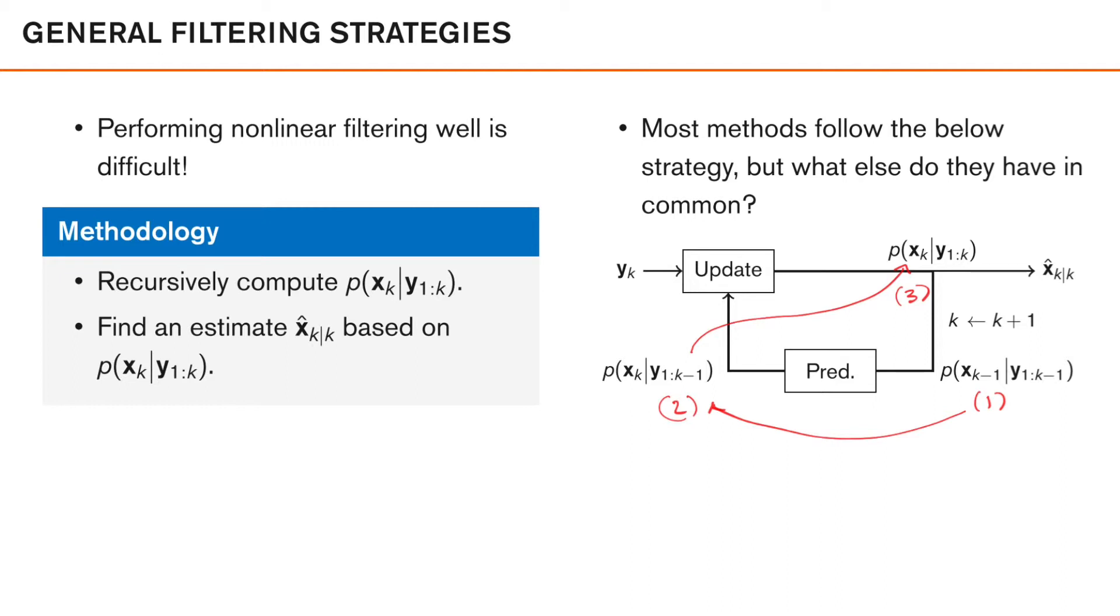Up until now we have seen two examples of filters that use this methodology to recursively compute the posterior, and that is the Kalman filter and the extended Kalman filter. So what else do they have in common? To have a recursive filter, both assume that the prior, predicted density, and the posterior density are all Gaussian. It turns out that this is a rather common strategy and we will call all filters that do this as Gaussian filters.